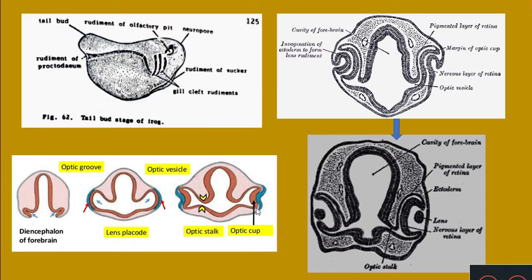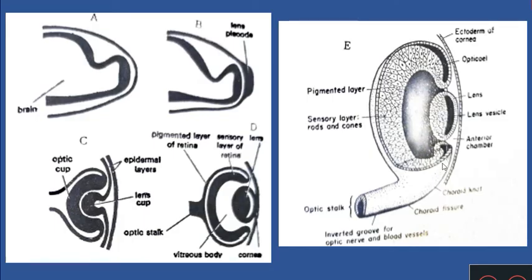This double-walled groove is called as the choroid fissure. The purpose of the choroid fissure is that the blood vessels which supply to parts of the retina and other parts of the optic cup enter through the choroid fissure. So the choroid fissure is a pathway for the passage of blood vessels supplying to parts of the eye such as the retina. During later embryonic stages this fissure will close.